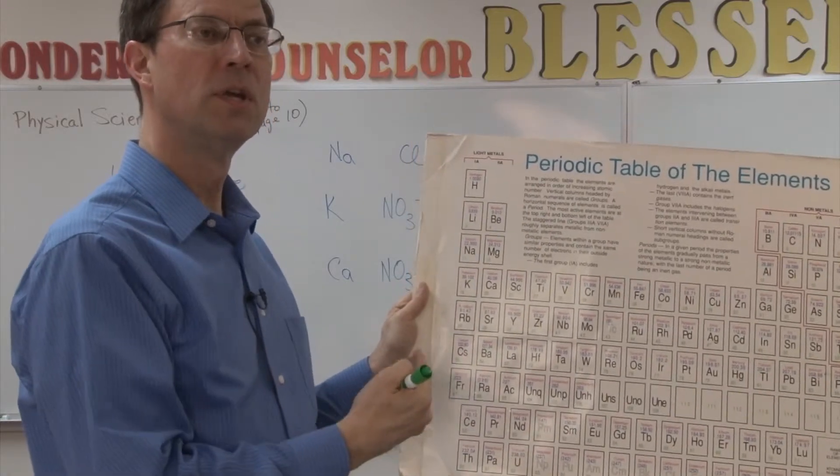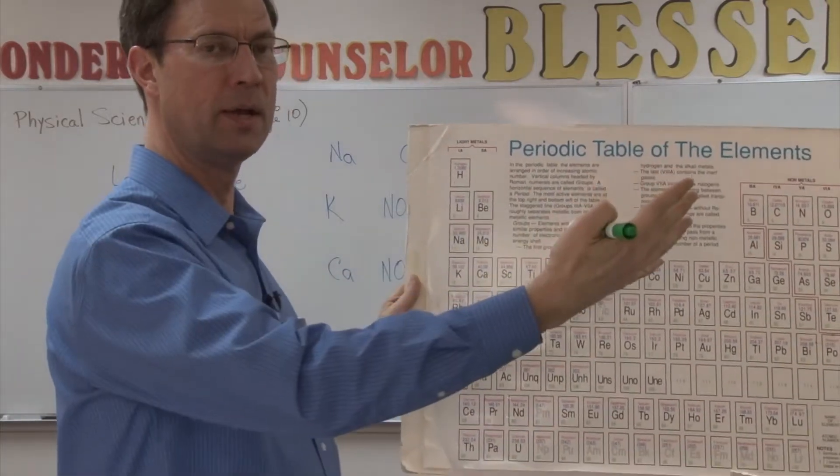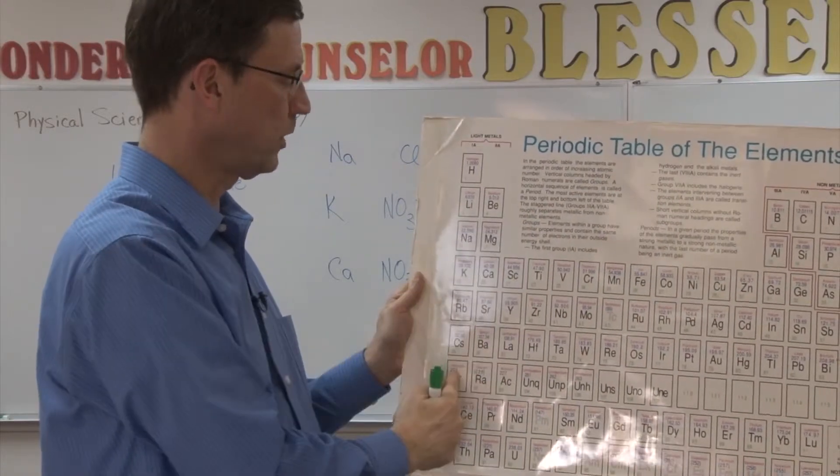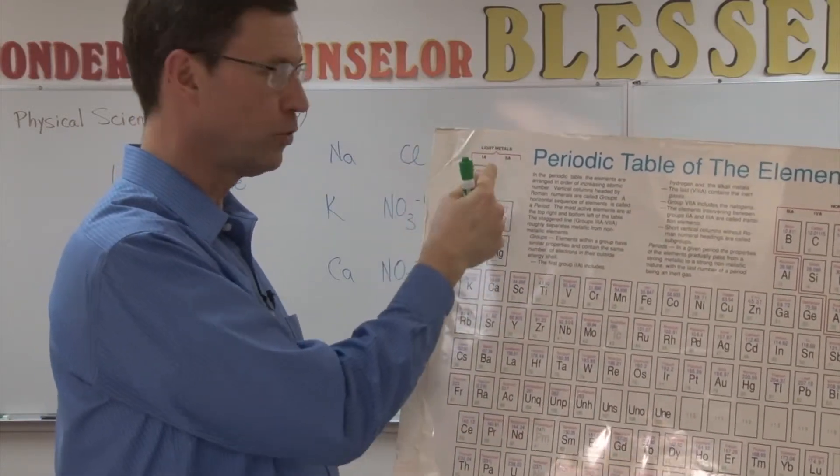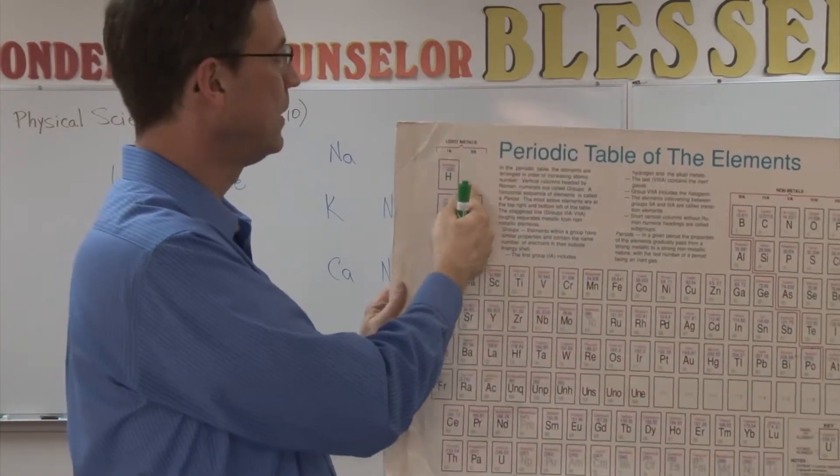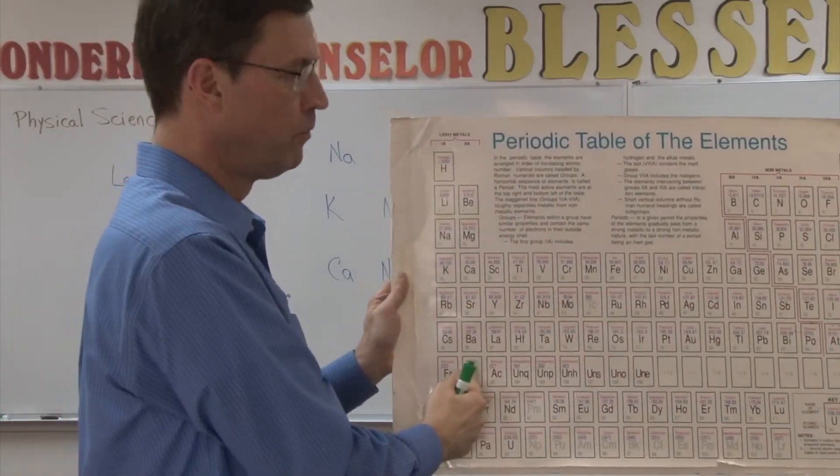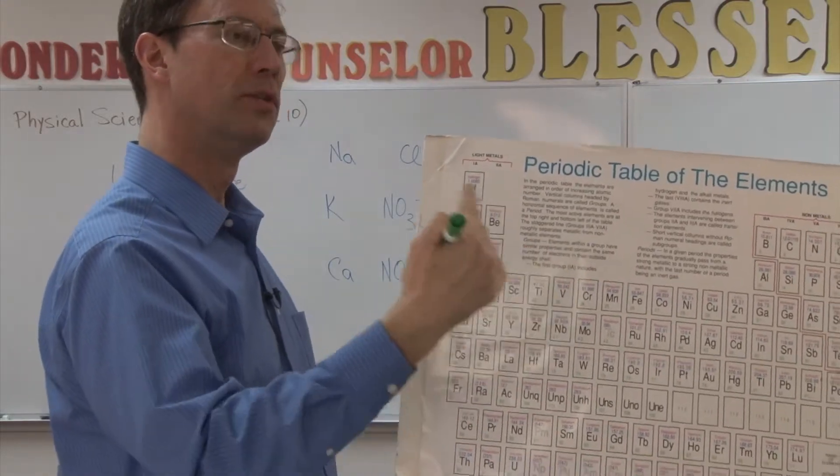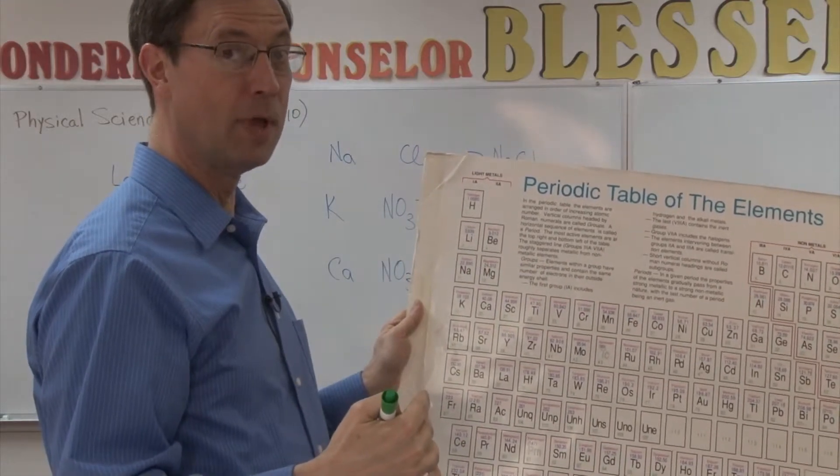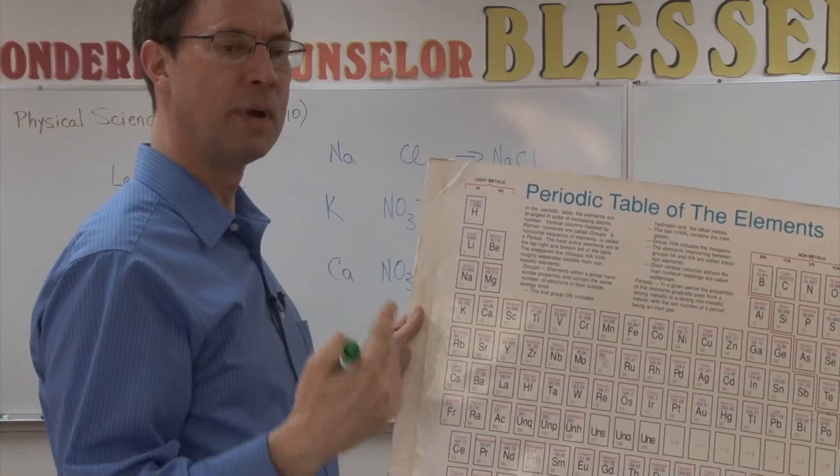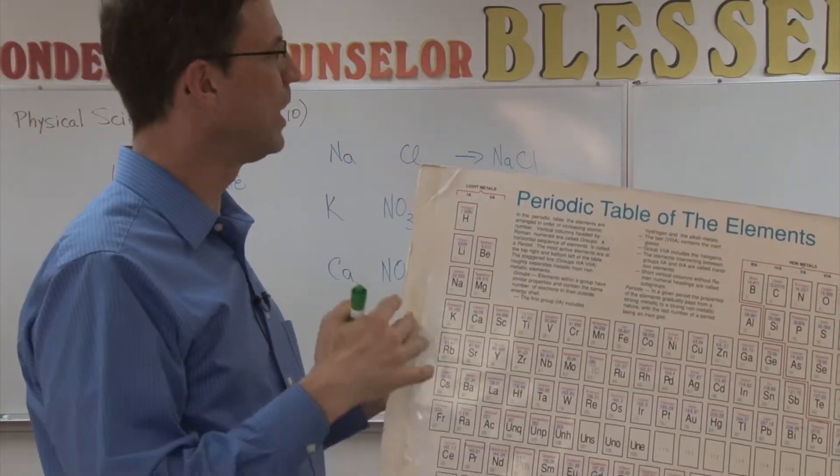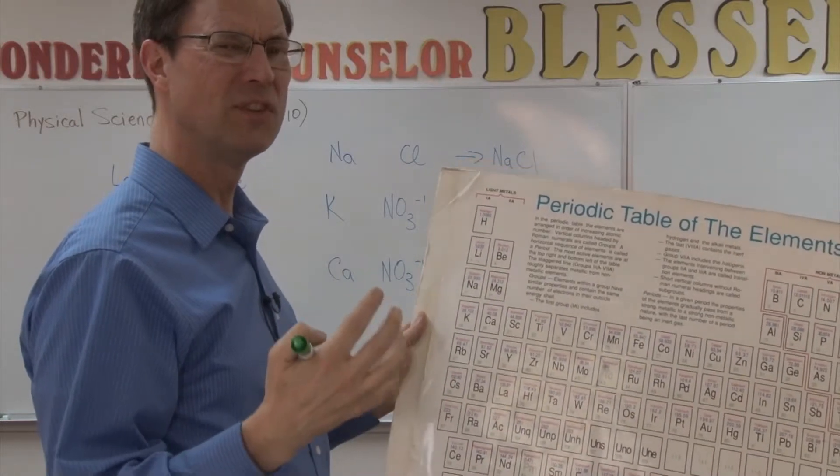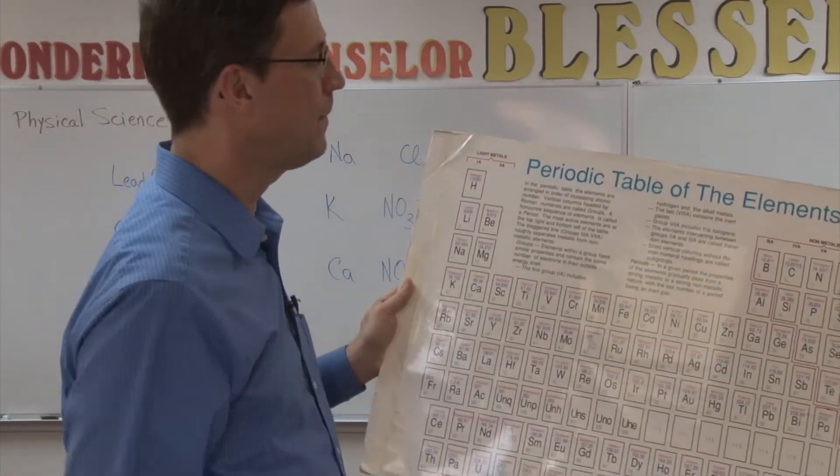Metals tend to want to give up an electron. So they only have one electron if they're in this column. Two electrons in their outer shell, we call those valence electrons, if they're in this column. They want to give those up because as soon as they do, the shell right below that, the energy level, has the maximum number of electrons and so the atom is very happy. When it only has one or two, it just feels insecure and just wants to get rid of that electron.